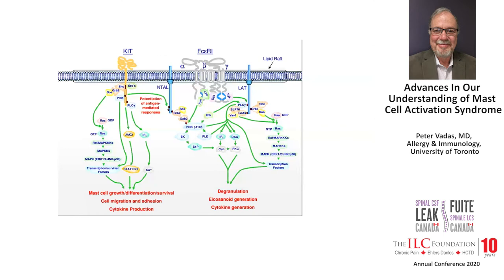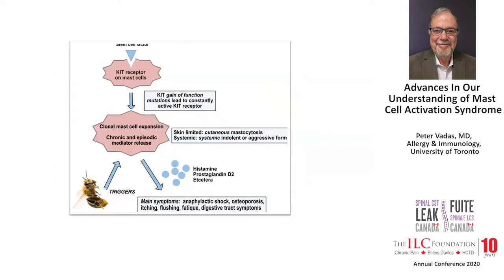This slide shows the two receptors on the mast cell surface. The KIT receptor to the left is important for clonal mast cell disorders — it's the receptor that becomes mutated, causing increased numbers of mast cells. When someone develops either cutaneous or systemic mastocytosis, they're prone to symptoms ranging from mild itching all the way through to anaphylaxis.